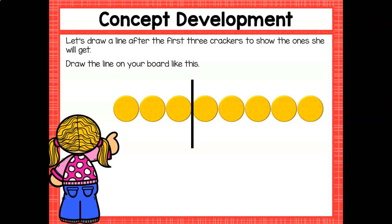Now, we have to make a number bond out of our picture. So we have some crackers for our friend, which we know are three, but we don't know how many we have for ourselves. Let's count that right now. One, two, three, four, five. Very good. We have five crackers for ourselves.